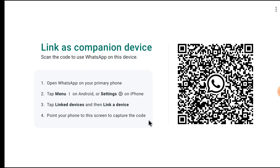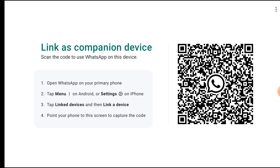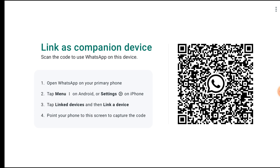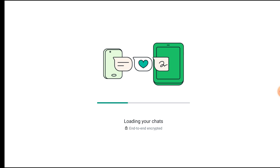Now you should scan the QR code from your mobile phone. Open WhatsApp on your mobile phone and go to the Settings option, then go to Linked Devices. Click on Link a Device and scan the QR code shown on your TV screen. I am scanning the QR code now. It is loading my chats — this may take time because I have a lot of chats.